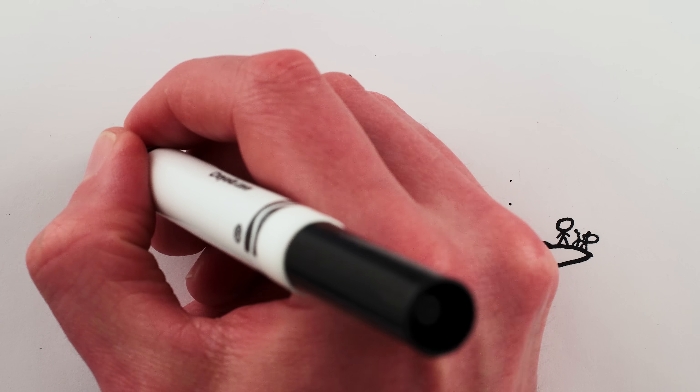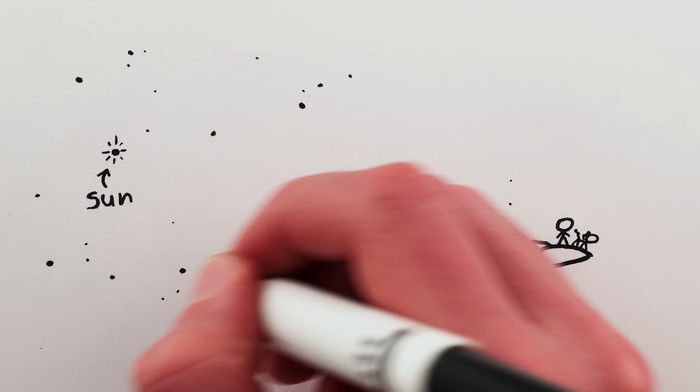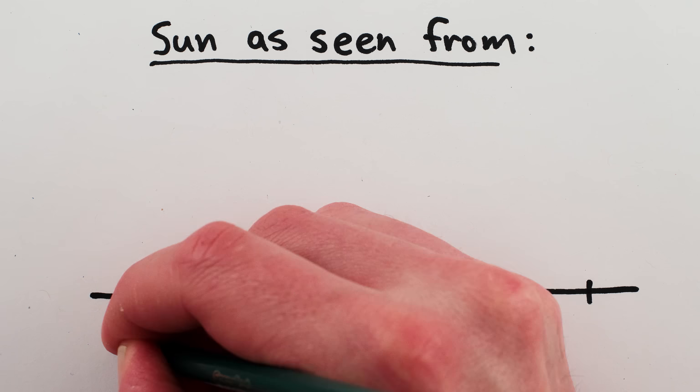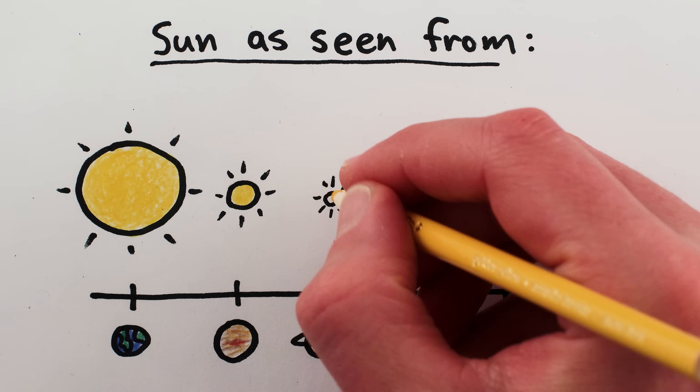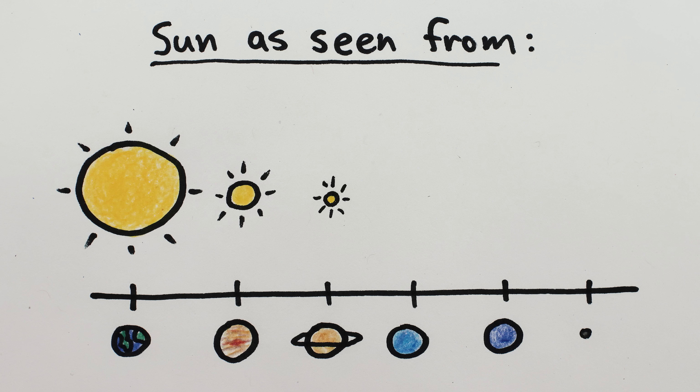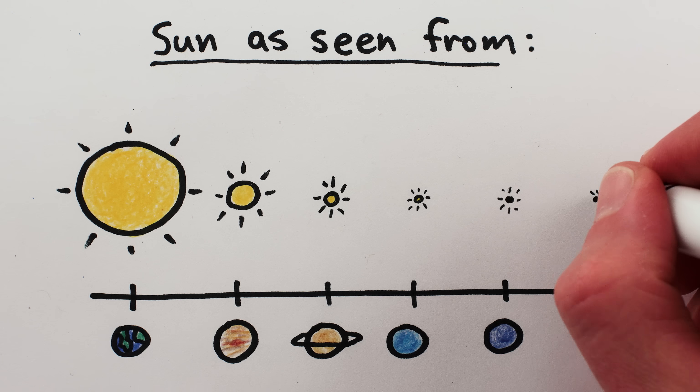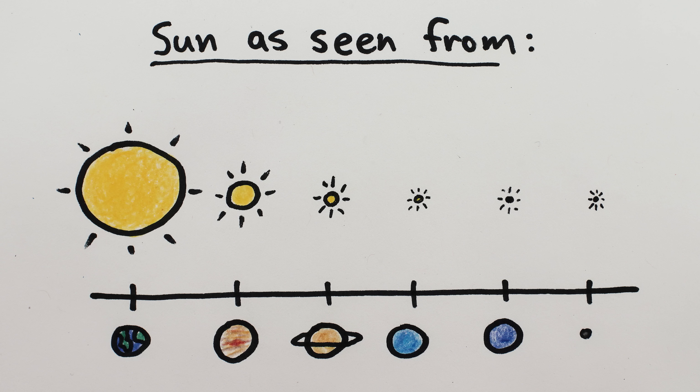Once you get past Saturn, you're far enough away from the sun that it starts to appear more like the star that it is – just a point in the sky, rather than having a distinguishable disc. I mean, even from Saturn, the sun only appears 10% as big across as from here on Earth. Uranus is almost twice as far from the sun as Saturn, so the sun appears half as big again. And it's even worse on Neptune, where the sun only appears slightly larger than Jupiter and Venus do from Earth.